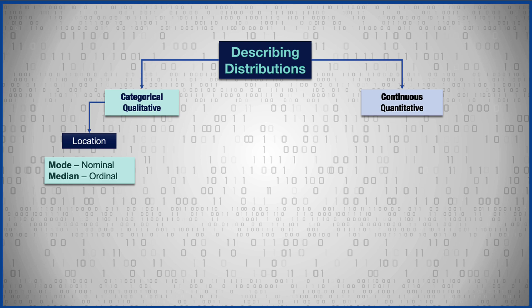For a measure of location with nominal data, you will choose the mode, which tells us the most frequently occurring score — this would be the highest bar on the bar chart. For ordinal data, you could use either the mode or the median, although if possible it's nice to use the median with ordinal data.